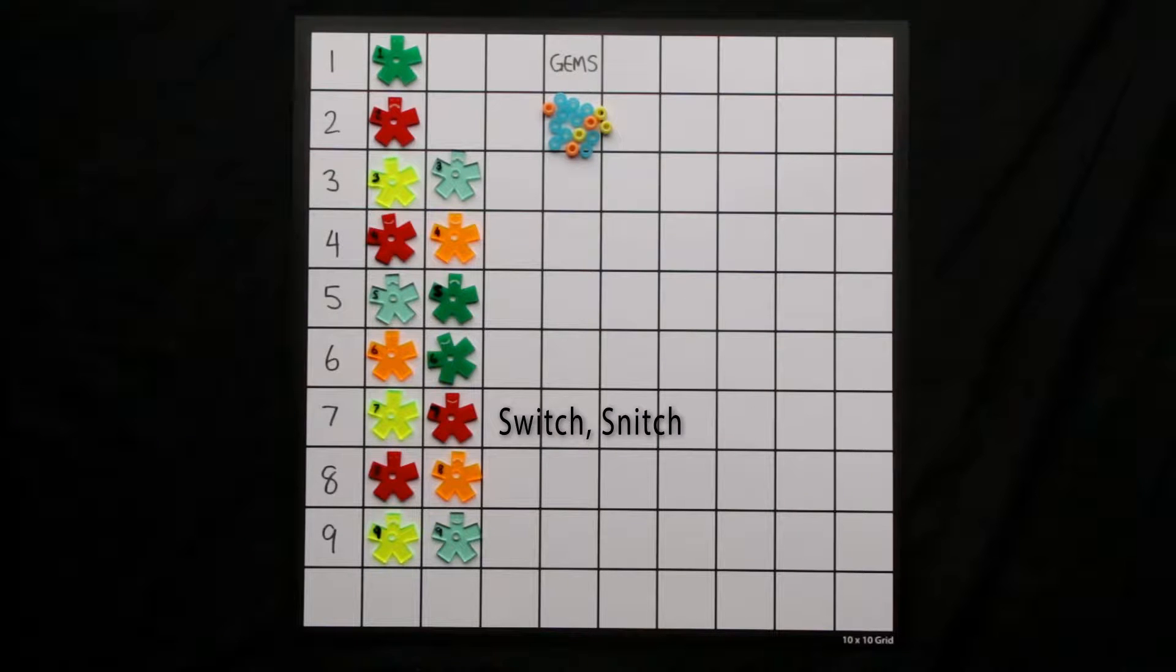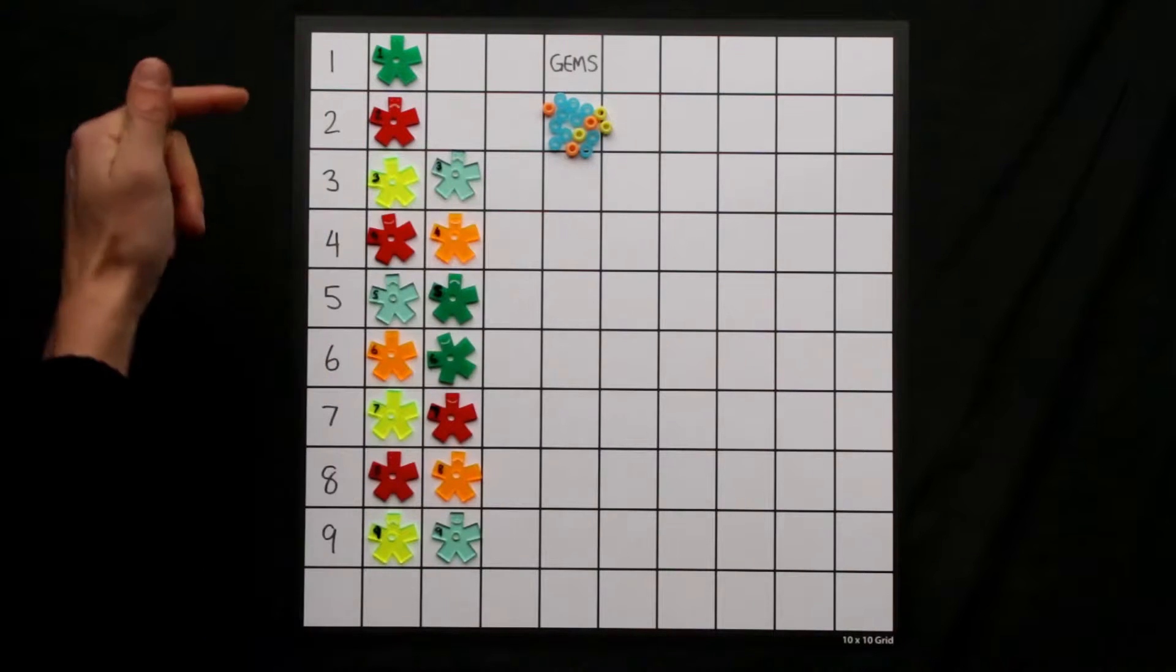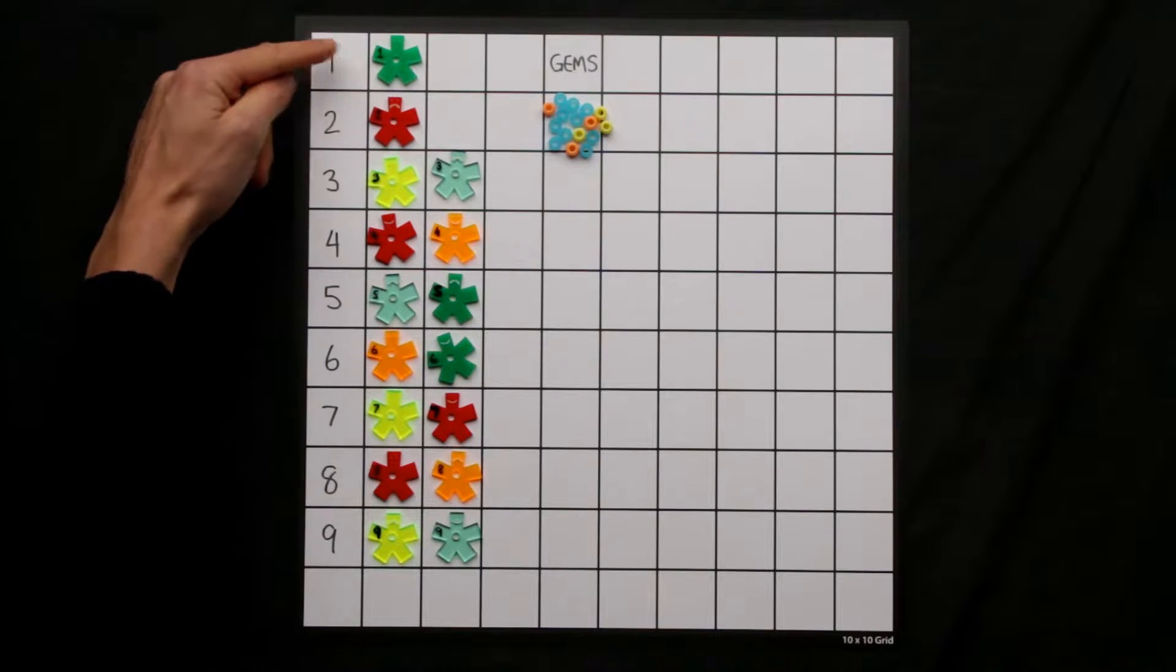To play switch, snitch, and steal, you will need 16 peeps, and you need to label them with numbers.